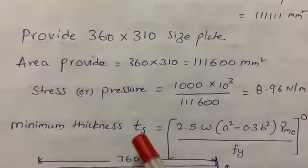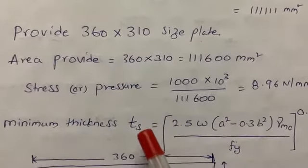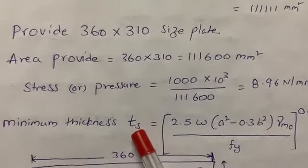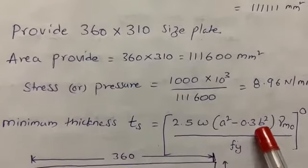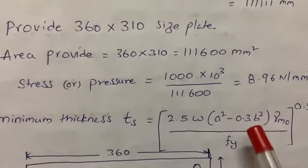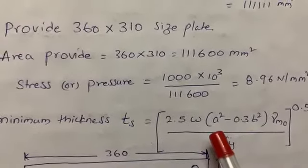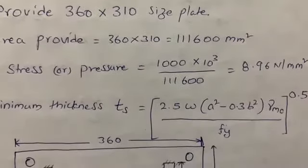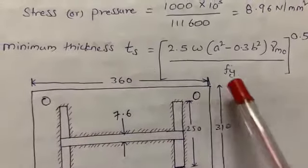Next, we calculate the minimum thickness for the slab base. As per IS 800:2007, on page 47, the formula is: t_s = [ 2.5 × W × (a² − 0.3b²) × γ_M0 / f_y ]^0.5. In the code book it is written as a square root over the formula, but I have converted that root to a power of 0.5. In our diagram, 360 mm is one side and 310 mm is the other.